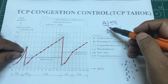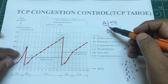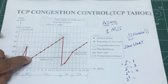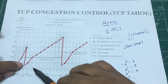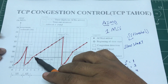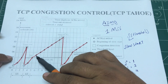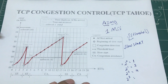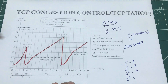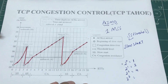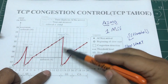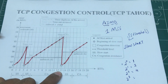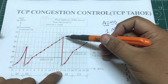Additive increase is not in the slow start region — slow start increases exponentially. Additive increase begins when you hit the threshold value. At that point, instead of going exponentially, you start going linearly — sending one more packet at a time, one packet at a time. This is the congestion avoidance phase.